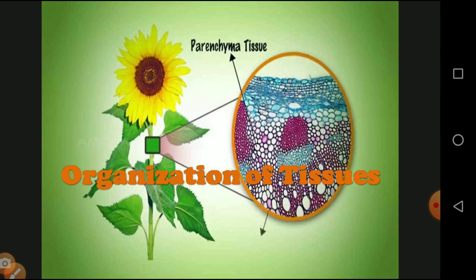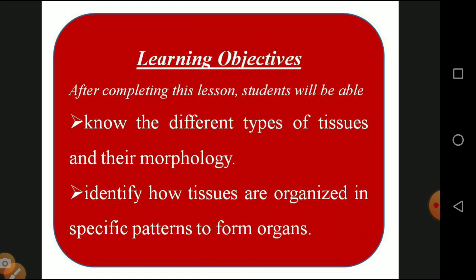After completing this lesson, you are going to be able to understand: number one, know the different types of tissues and their morphology. From sixth standard itself we are studying about plant cell and animal cell and the morphological differences. Plant cells have a cell wall while animal cells do not. We also see parenchyma, collenchyma, and sclerenchyma, and their shapes - round, oval, and irregular.